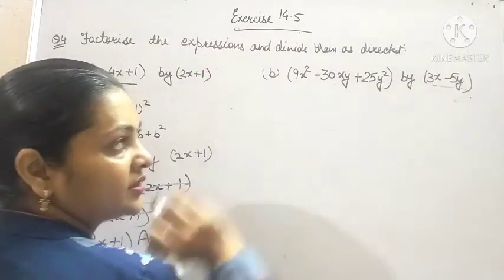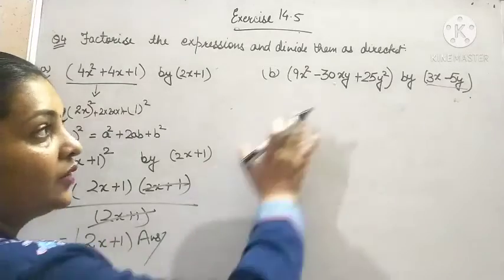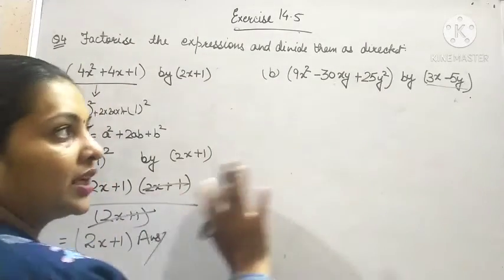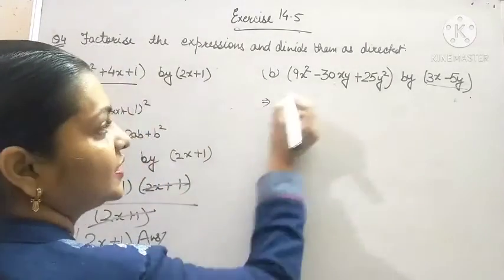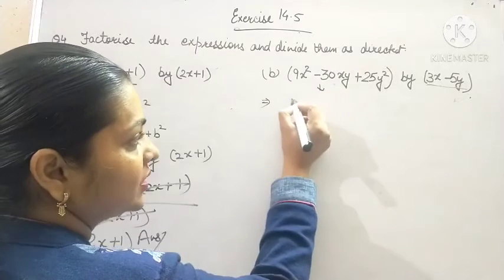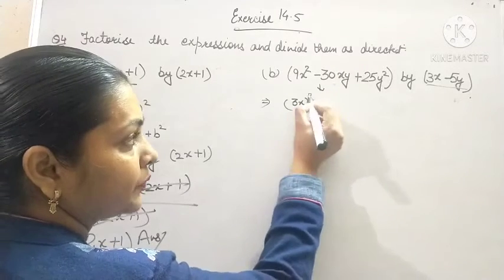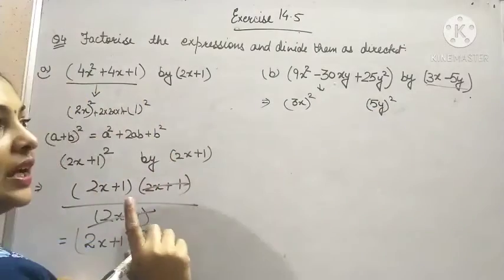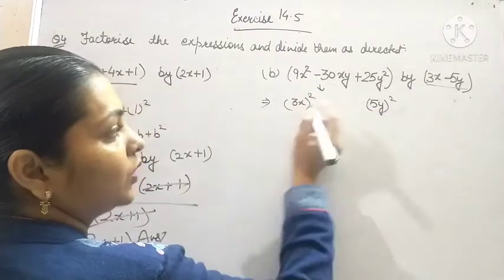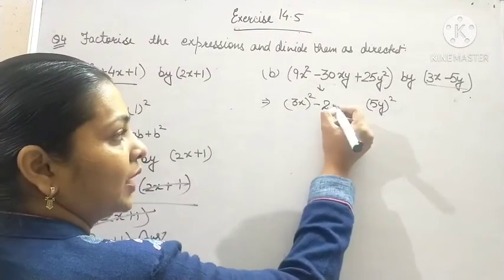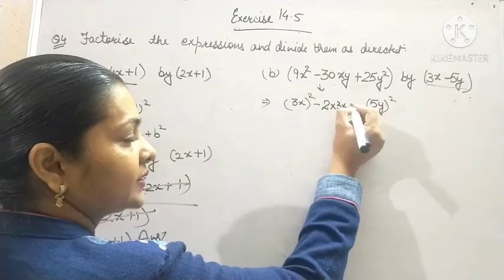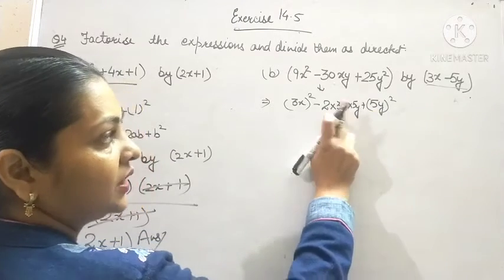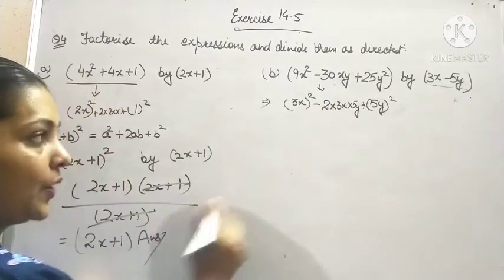Now, here the expression is 9x square minus 30xy plus 25y square. We have to check whether it is the whole square of 3x minus 5y or not. In this expression this is the square of 3x and this is the square of 5y. Only what we have to check is whether it is equal to minus 2ab or not. Minus 2 into 3x into 5y: 2 times 3 is 6, 6 times 5 is 30. Yes, we are obtaining it.